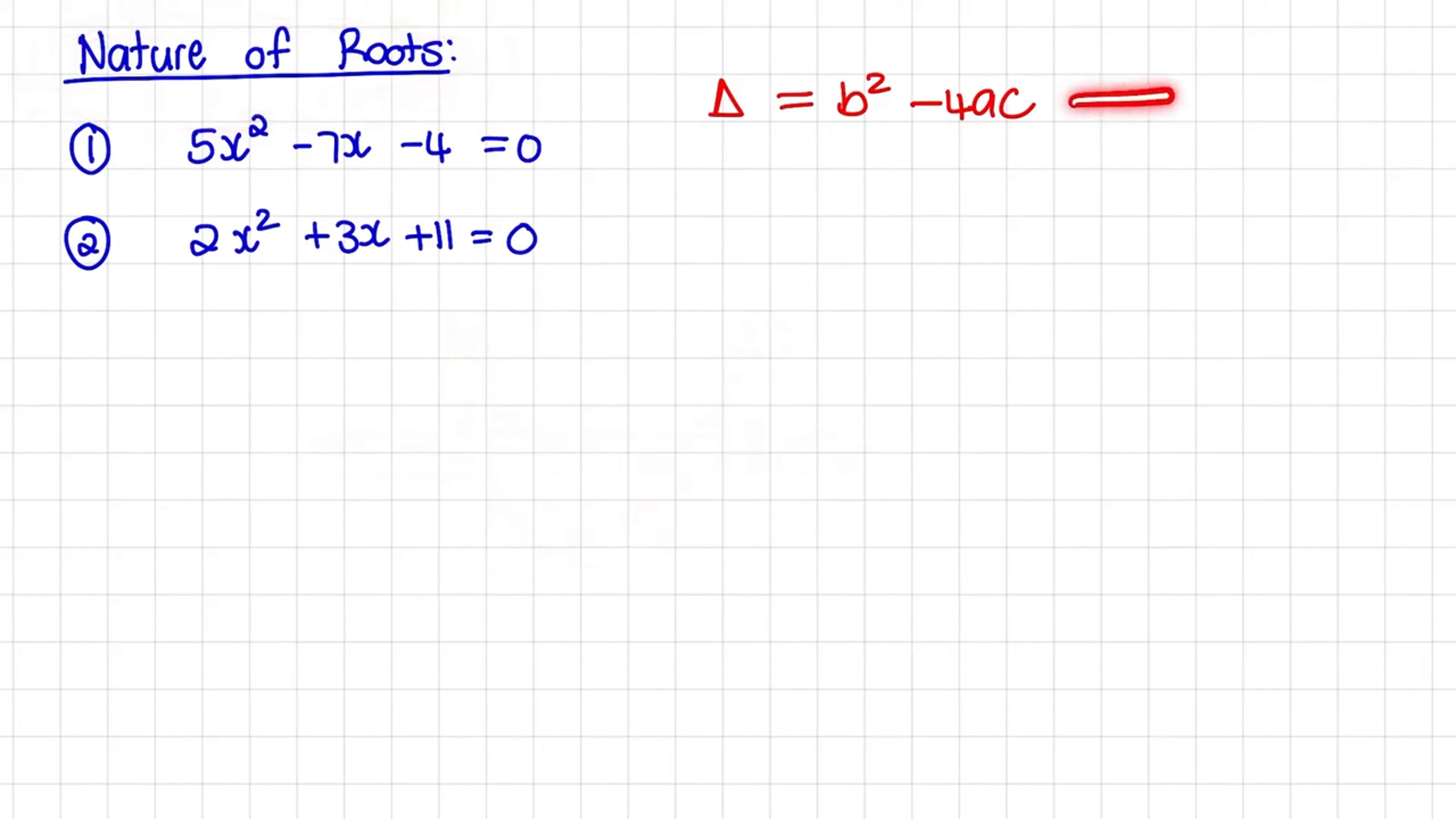We used an application of the quadratic formula. We used b squared minus 4ac, which is in the square root of the quadratic formula. This is called the discriminant.